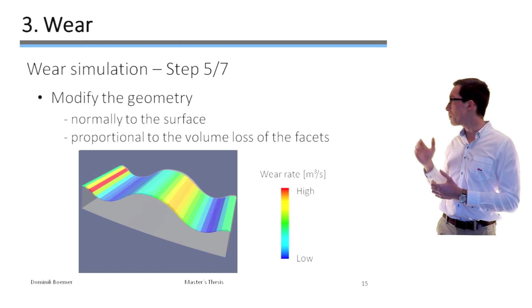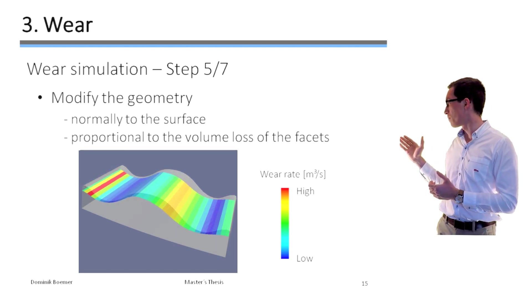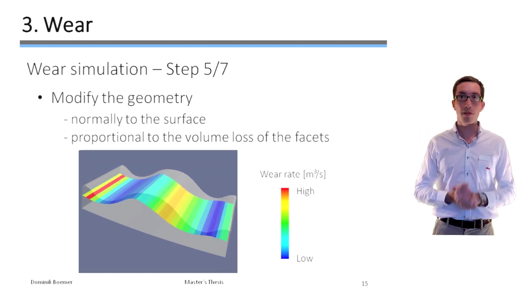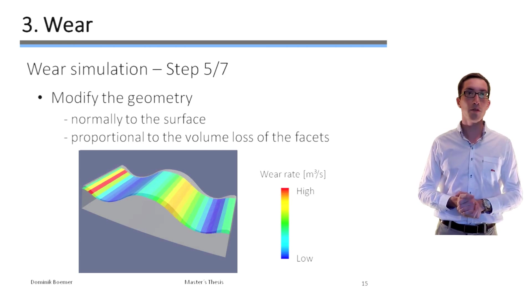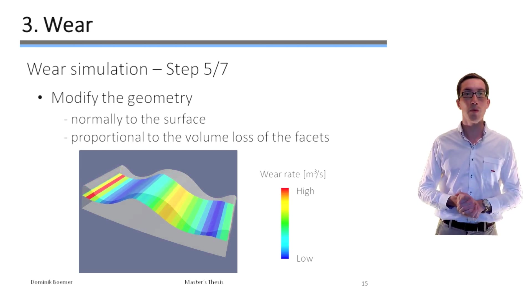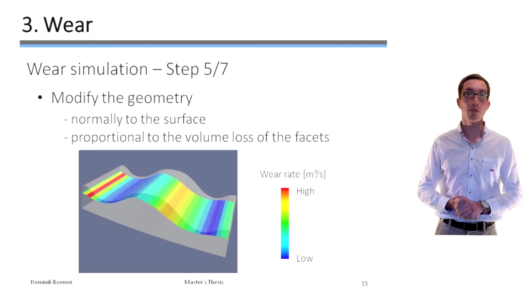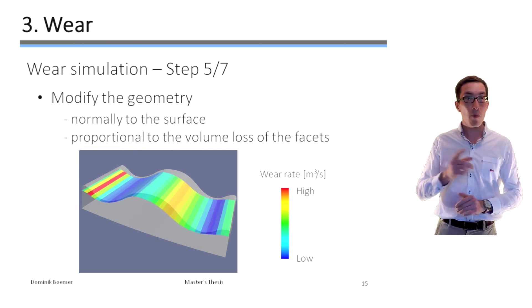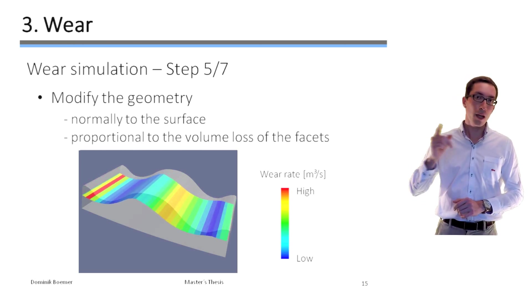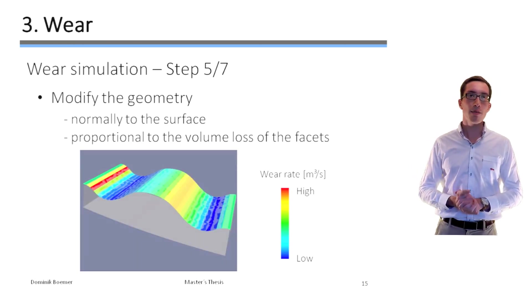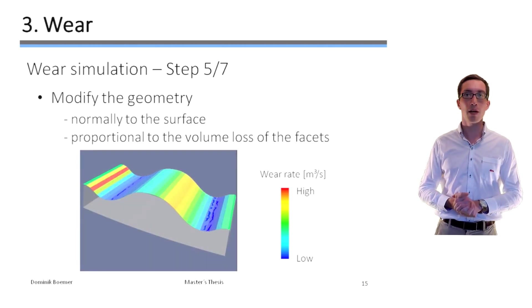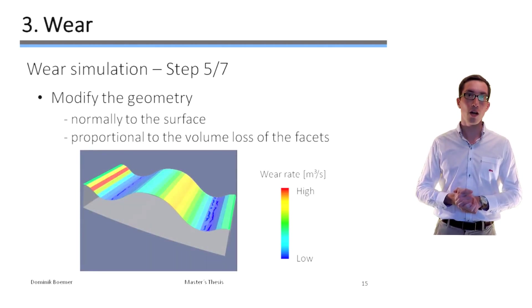So the color code represents the local wear rates. And the problem is obviously that the colors in this video do not change even though they represent the wear distribution. However, in the real ball mill, the wear distribution changes with the modification of the liner shape due to the modified flow pattern of the balls. In order to capture this effect in the simulation, the previous steps of the wear simulation have to be repeated and the geometry has to be adopted by increments.